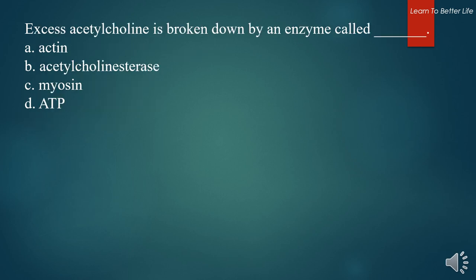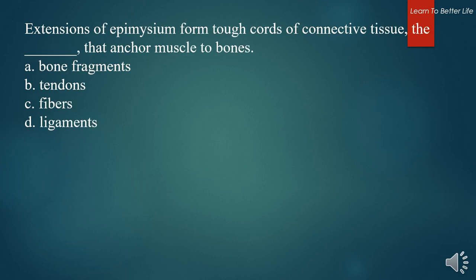Excess acetylcholine is broken down by an enzyme called what? A. Actin. B. Acetylcholinesterase. C. Myosin. D. ATP. The answer is B. Acetylcholinesterase. Extensions of epimysium form tough cords of connective tissue, the what, that anchor muscle to bones. A. Bone fragments. B. Tendons. C. Fibers. D. Ligaments. The answer is B. Tendons.